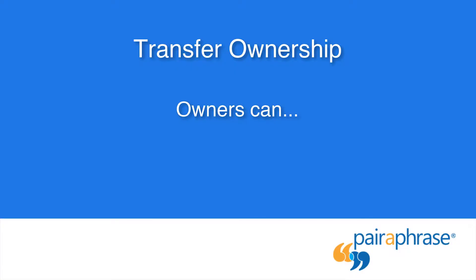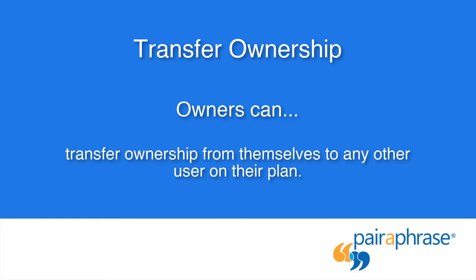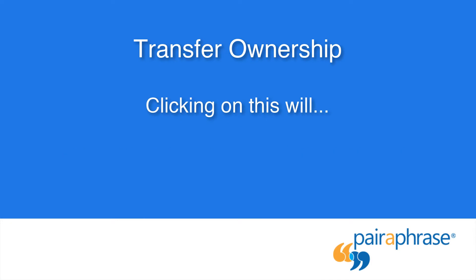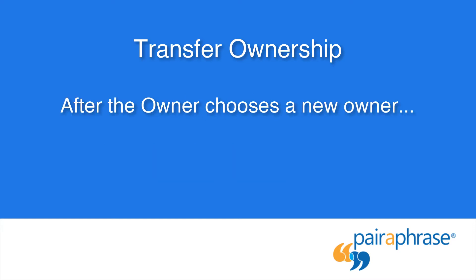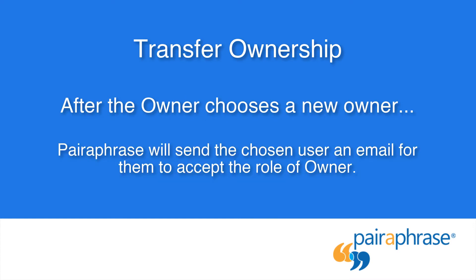Transfer Ownership allows owners to transfer ownership from one person to another. Owners can transfer ownership to any person on their plan. Clicking on Transfer Ownership will trigger a pop-up with a drop-down menu of all of the users to whom they can transfer ownership. After they choose a new owner, Paraphrase will send the chosen user an email for them to accept the role of owner.